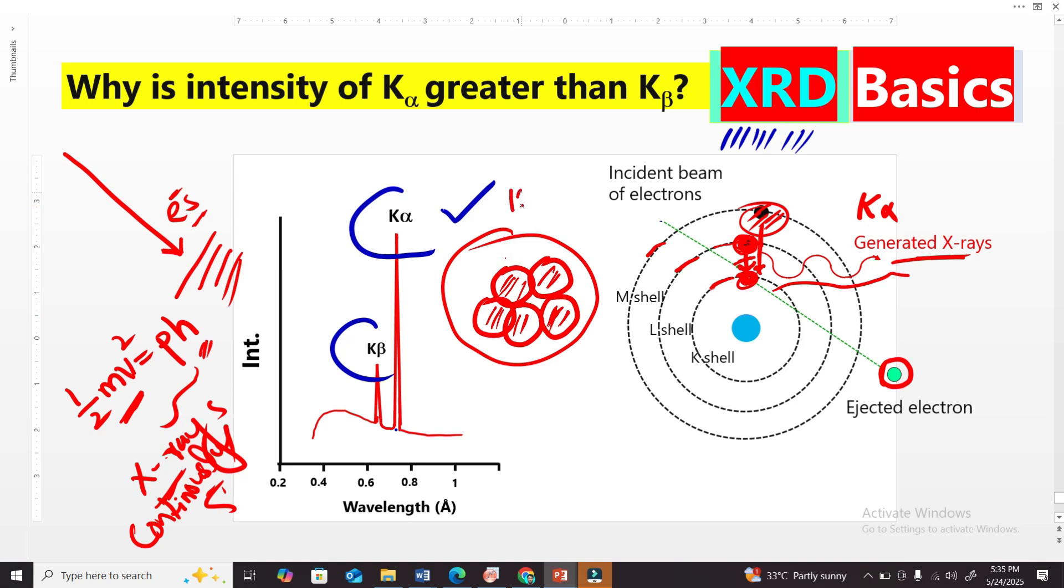Because let's suppose, if there are 100 atoms here, maybe the probability for 70 atoms is that the L-shell electron will fill this, we can see. And maybe for 30 atoms, the electron may be from M to fill this K-shell vacancy, we can see.